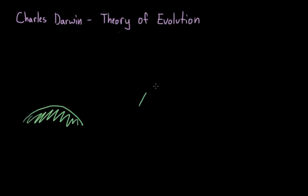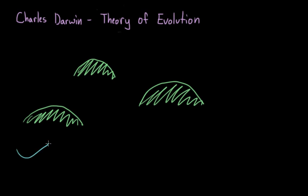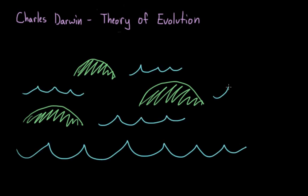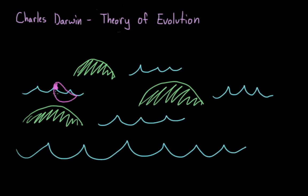Remember that the theory of evolution was put forth by Charles Darwin. He noticed that small variations in species, we'll use the beaks of finches as an example, varied over different locations. These finches would have short beaks on one island and long beaks on another.